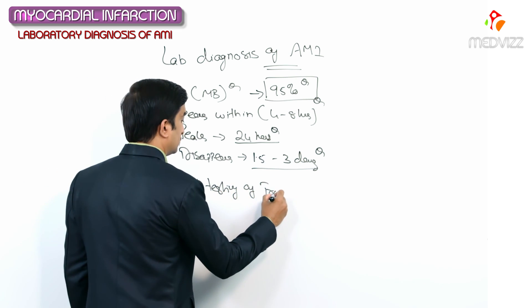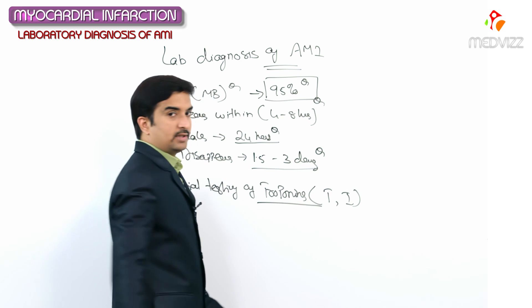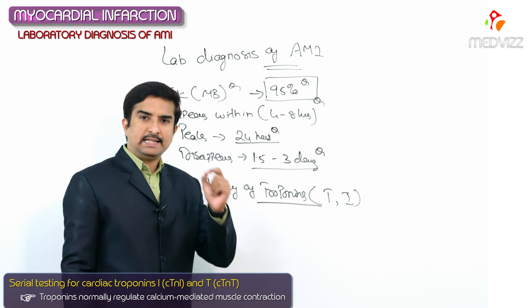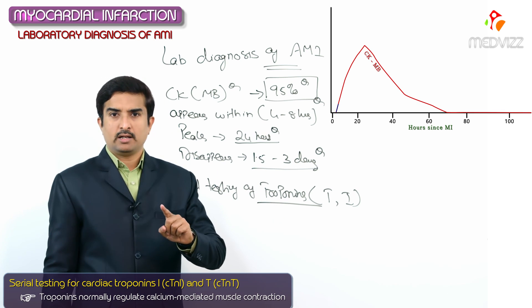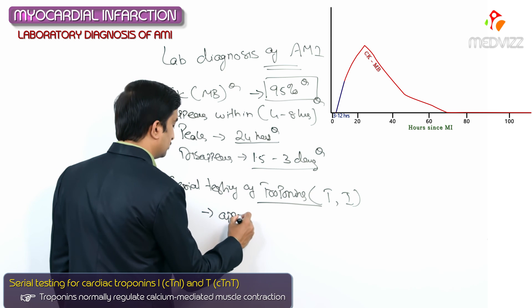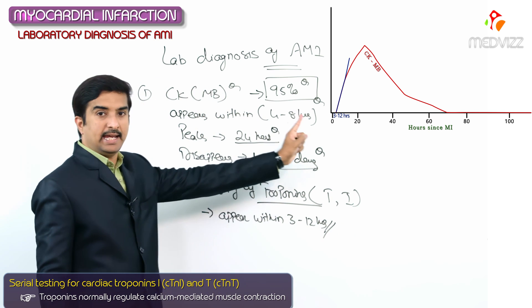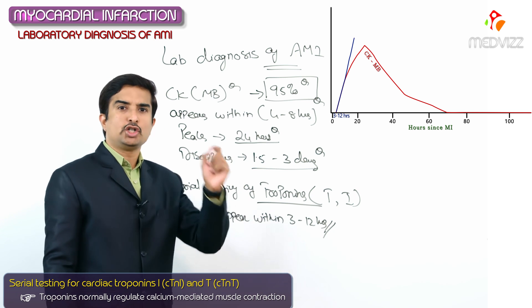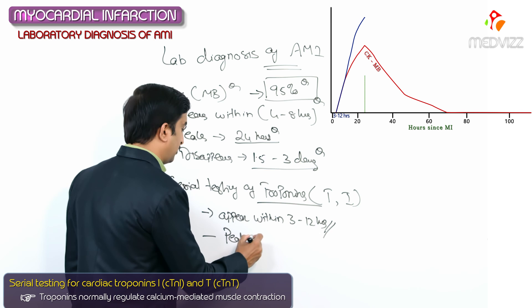The second serial test is for troponins — troponin T as well as troponin I. These troponins normally regulate calcium-mediated muscle contraction. Both cardiac troponin I and cardiac troponin T appear within 3 to 12 hours after infarction — earlier than CKMB — making troponins the first biomarker to appear after acute myocardial infarction. Peak values are seen at 24 hours, same as CKMB.